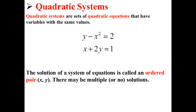Quadratic systems are sets of quadratic equations that have variables with the same values. Here we have a quadratic system: y minus x squared equals 2, and x plus 2y equals 1. The solution of a quadratic system of equations is called an ordered pair in the format x, y. There may be multiple, or no, solutions.